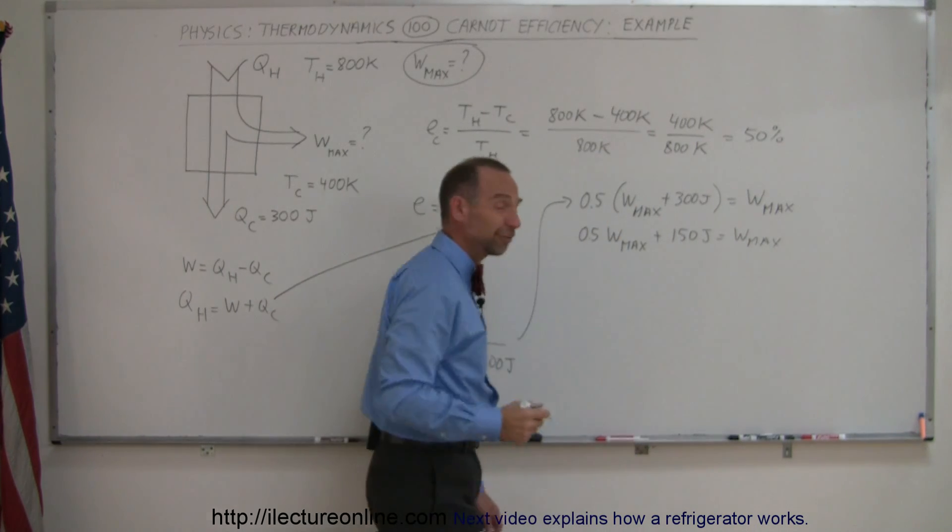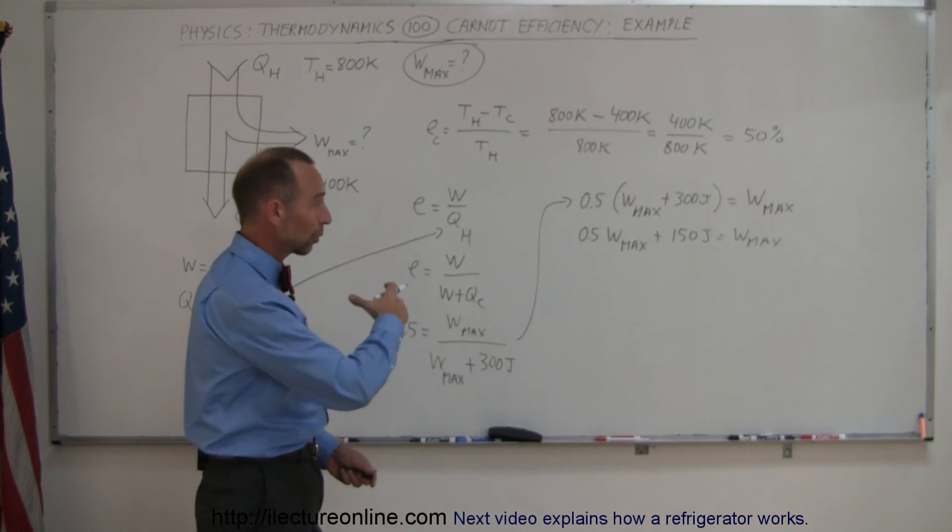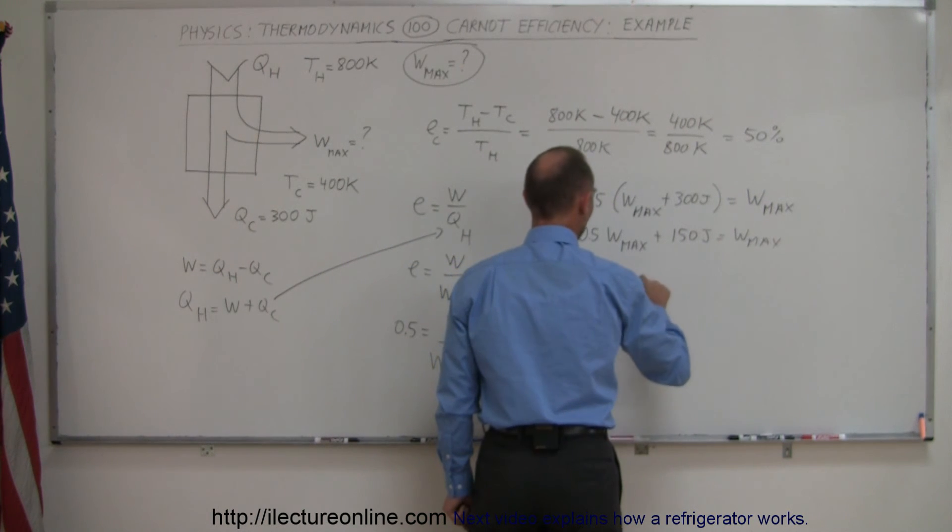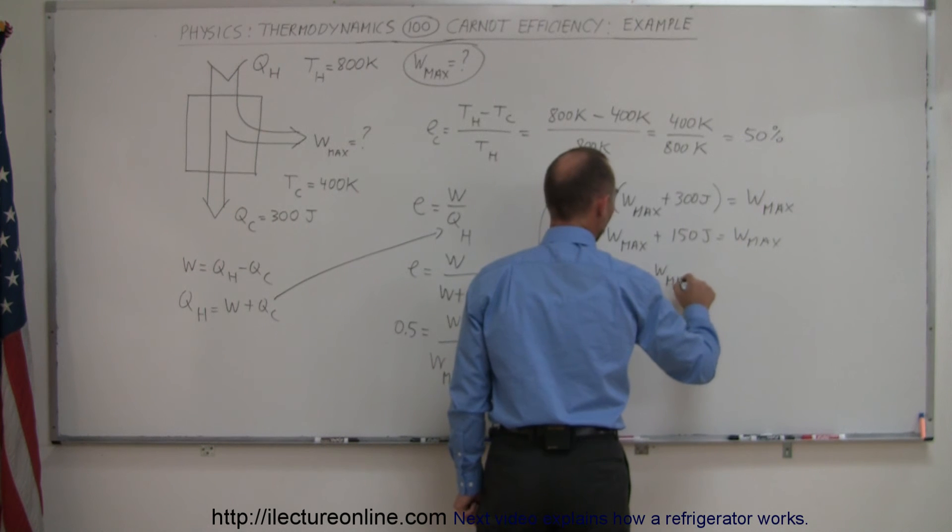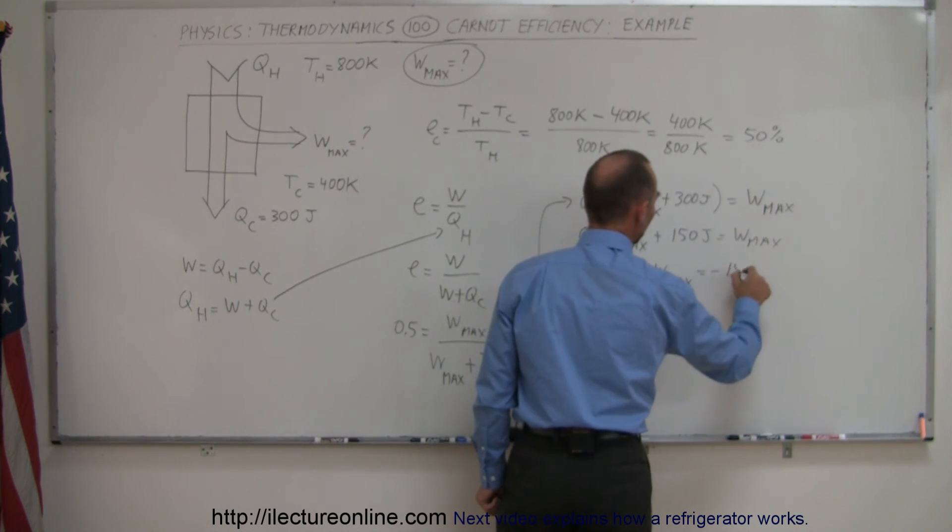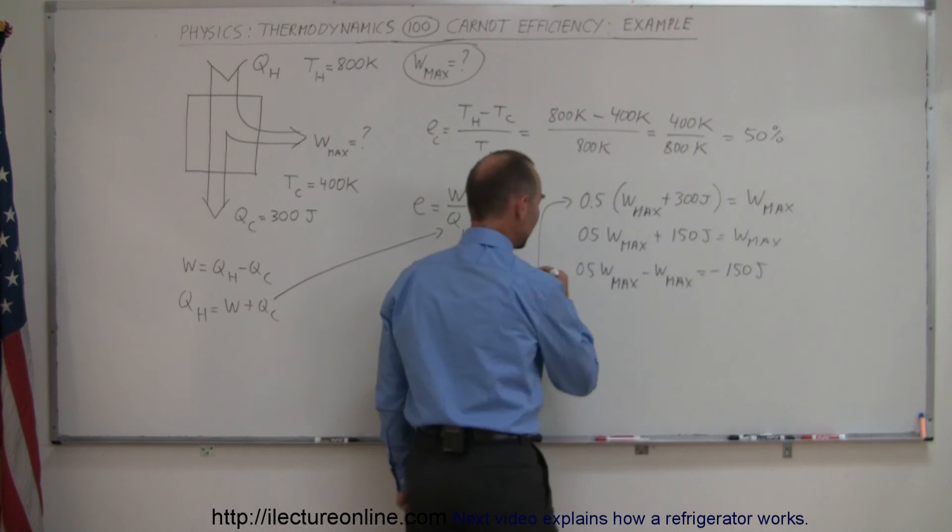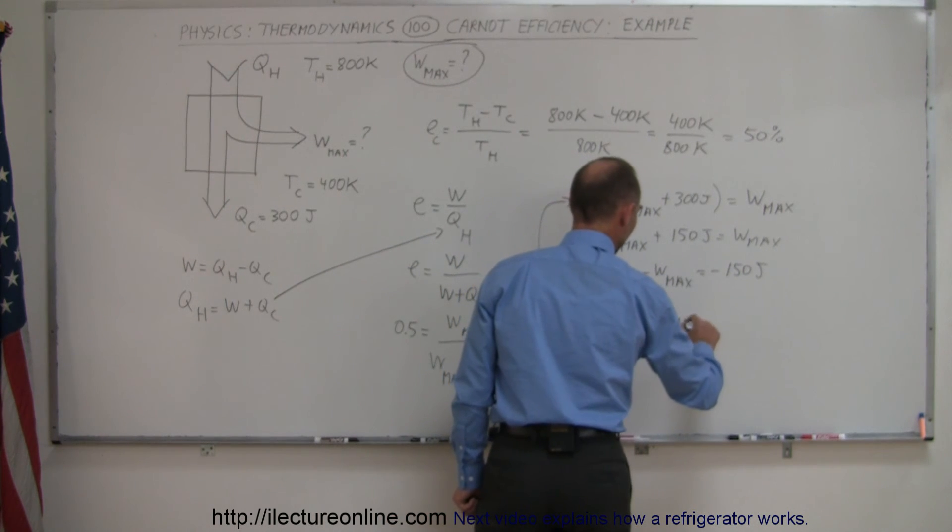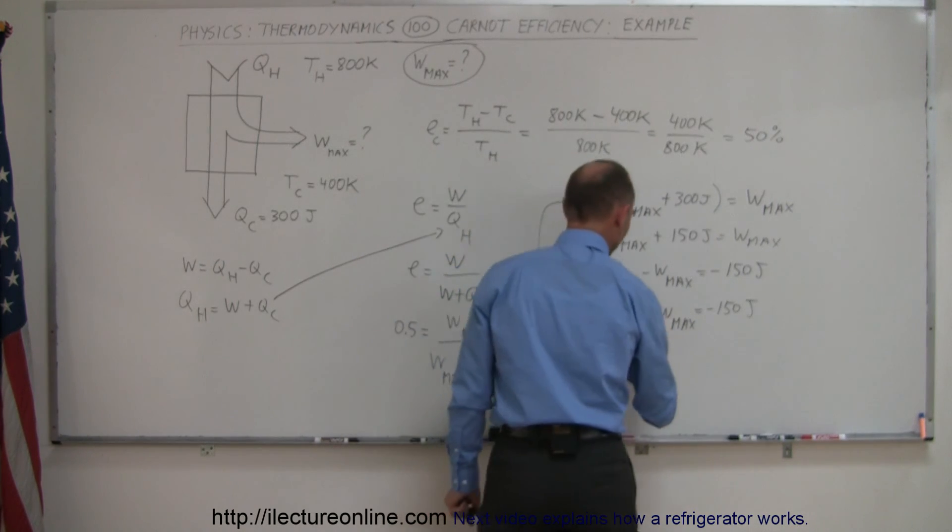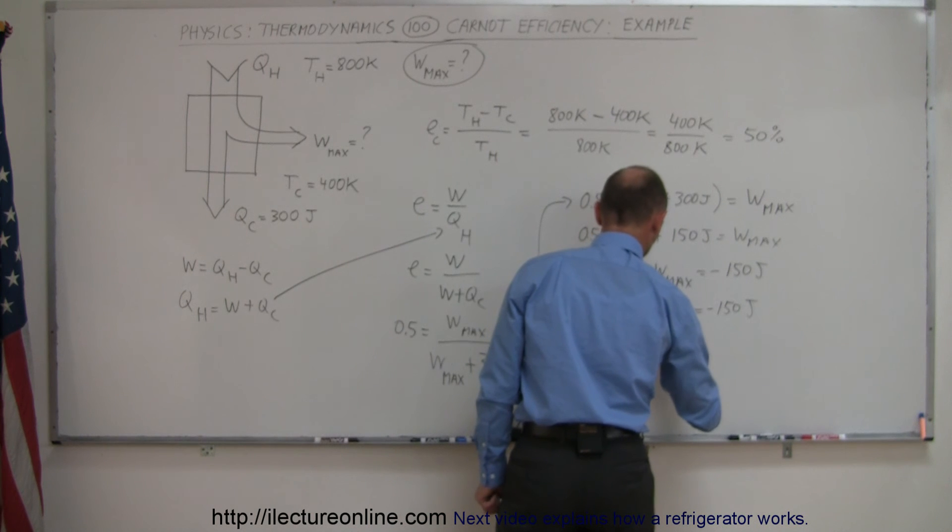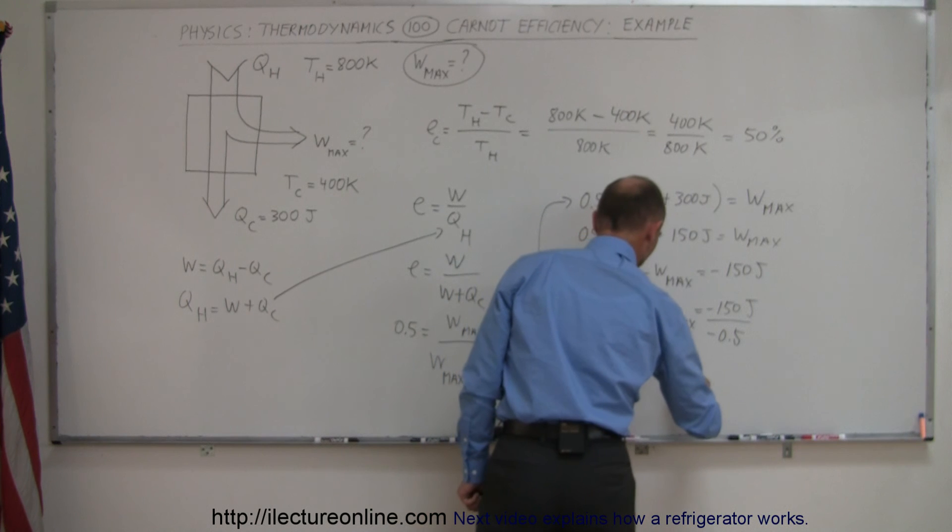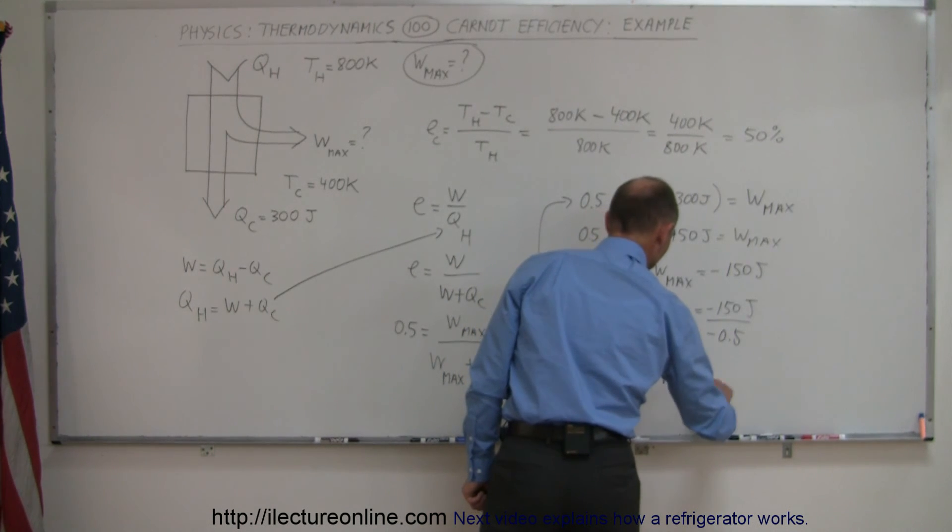Since we're solving for work max, we're going to move all the work max variables to the left side, so we have 0.5 work max minus work max is equal to, bring that across, get minus 150 joules. We combine these, so we have minus 0.5 work max is equal to minus 150 joules, and then we should divide both sides by minus 0.5, this cancels out, and so we have work max is equal to, and that would be a positive 300 joules.